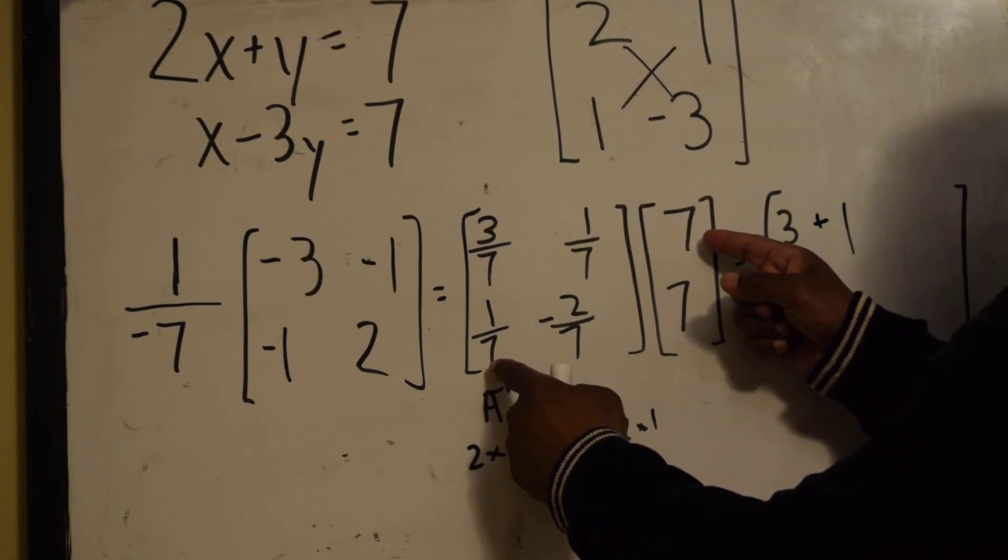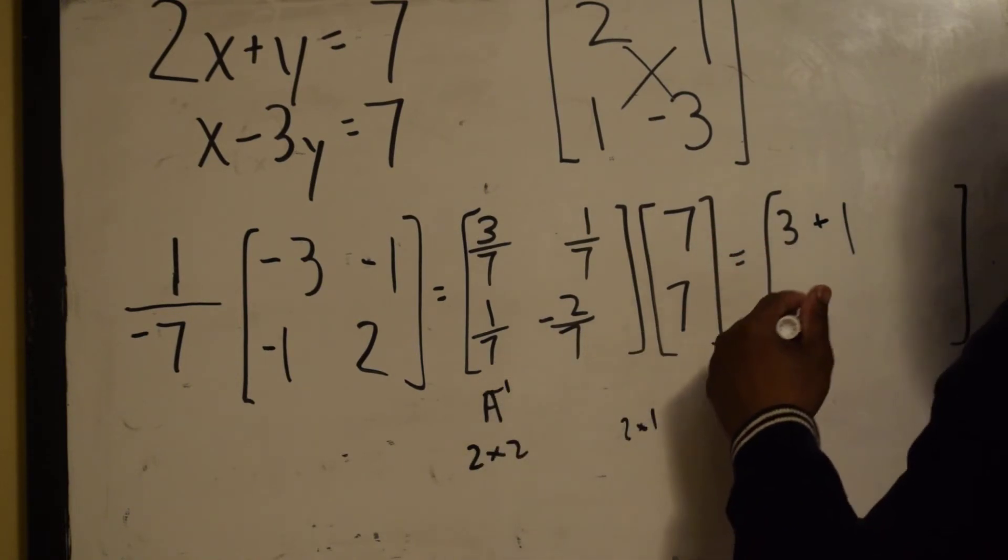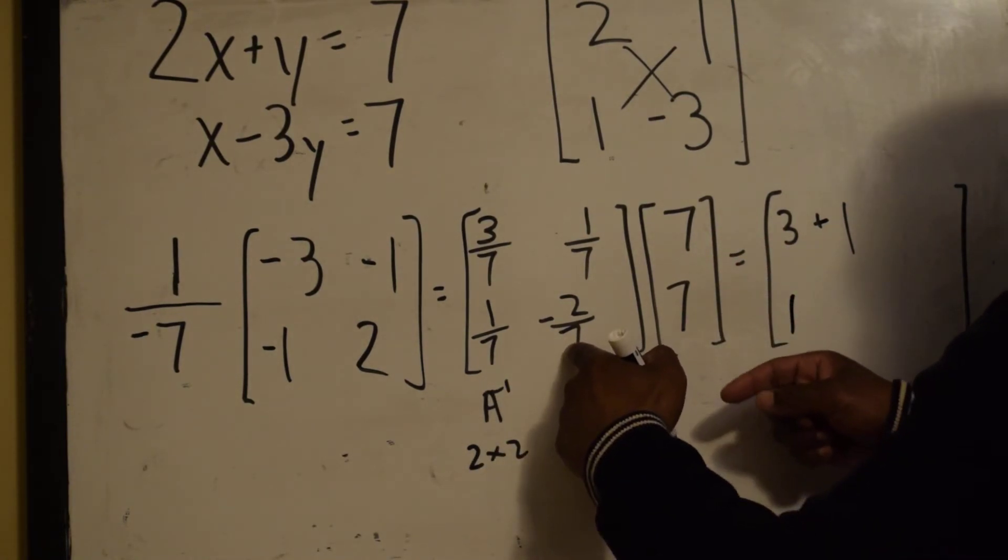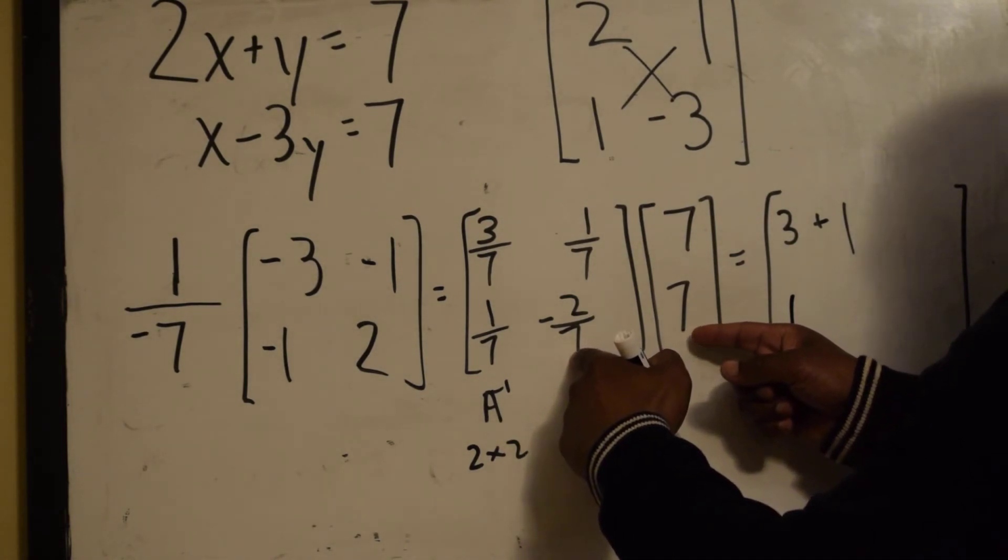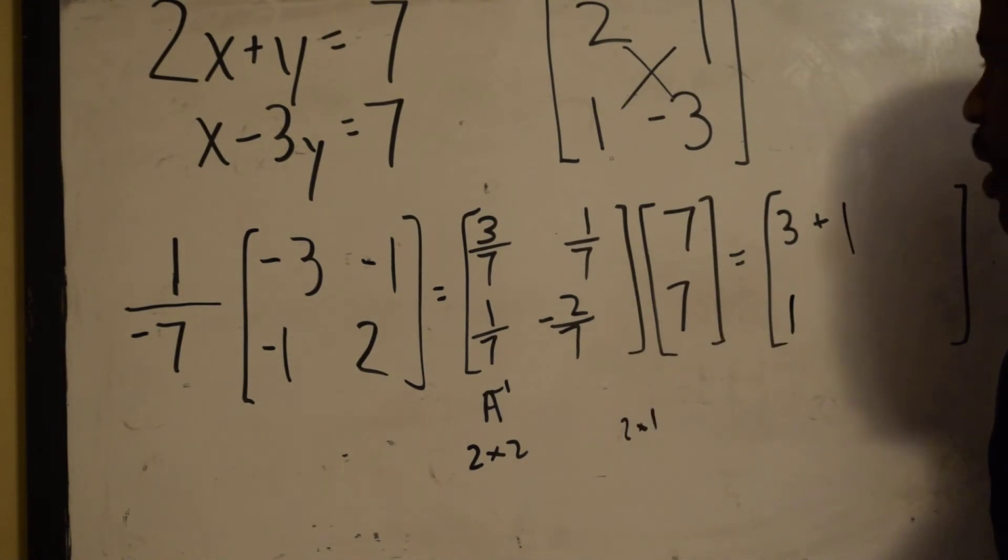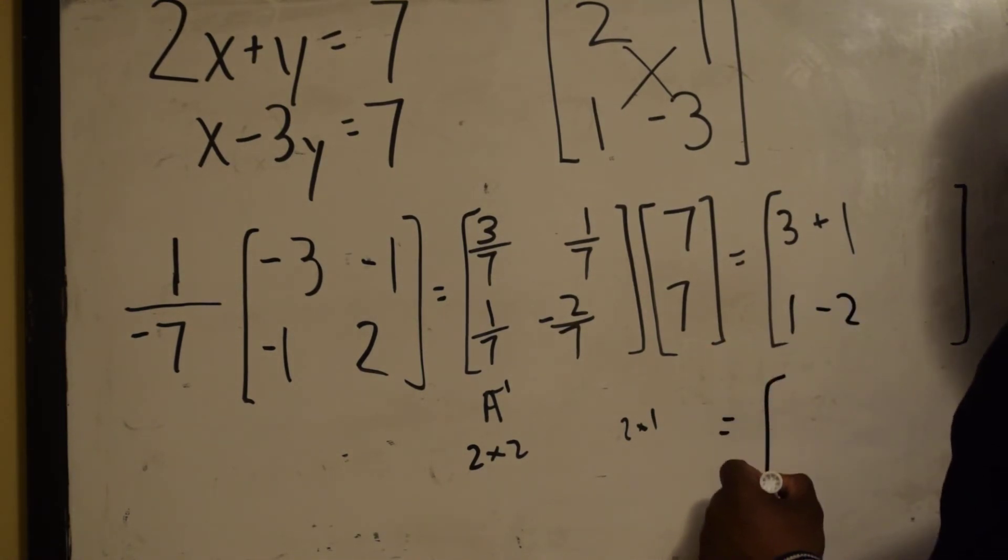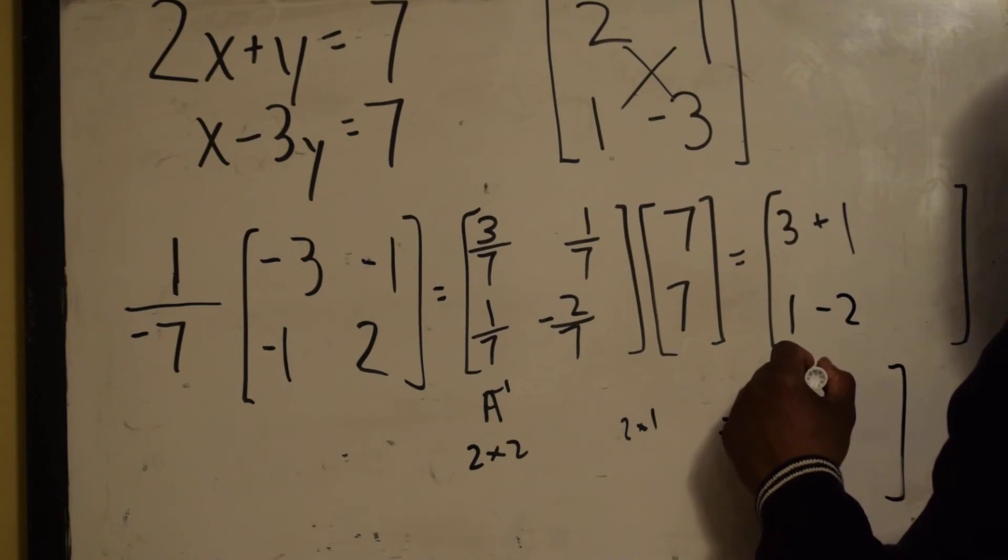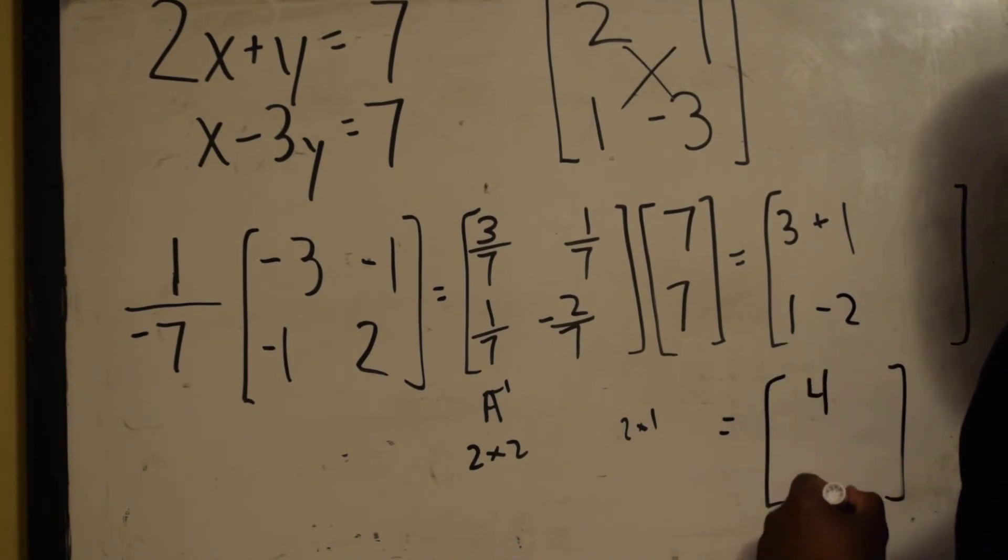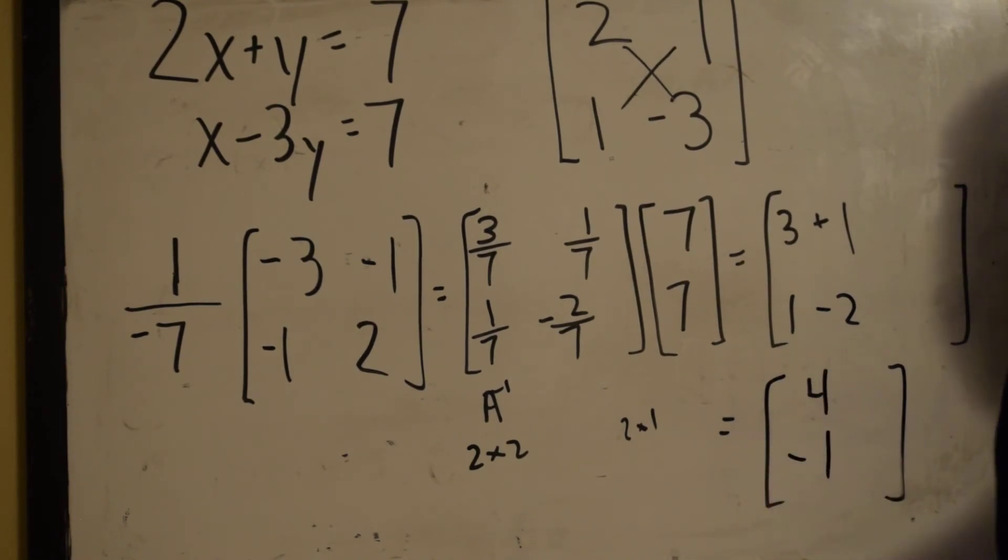And right here, 1/7 times 7 is 1. Negative 2/7 times 7 is negative 2. So our answer would give us 4 and a negative 1.